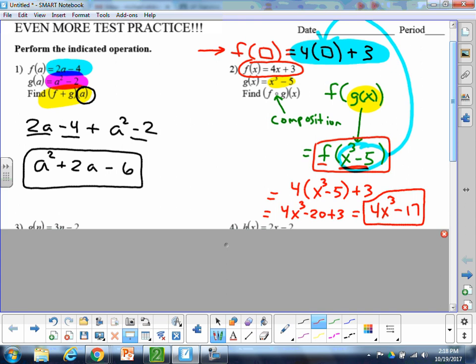We could either leave it like that, or if you want to, we could distribute the 4 out. So 4x cubed minus 20 plus 3. That would allow us to simplify by combining the like terms. 4x cubed minus 17 is probably the best way to write the final simplified answer. So again, that was composition. We took g of x, the inside function, and plugged it into the other rule, into f.